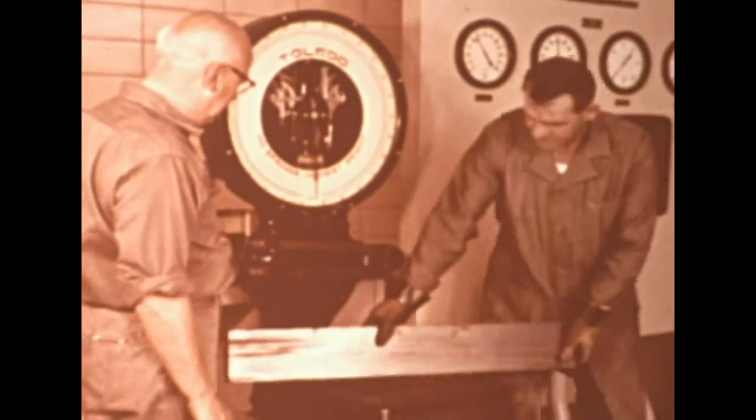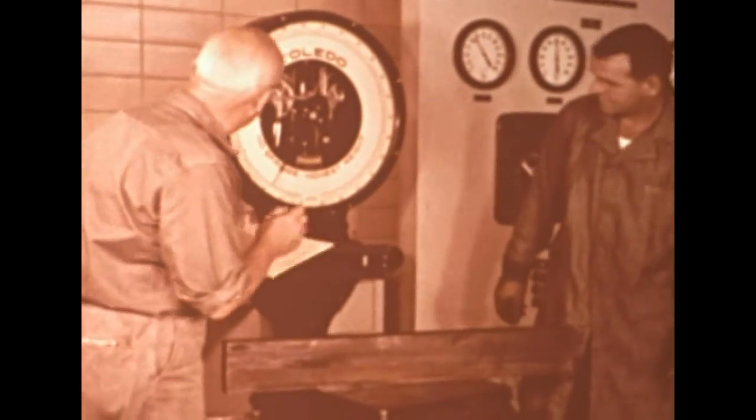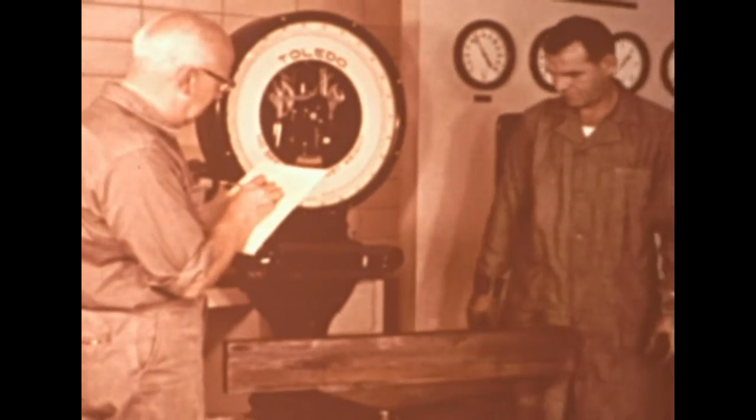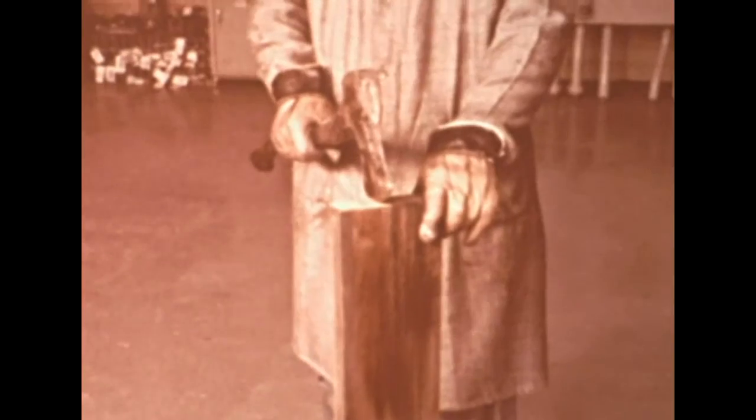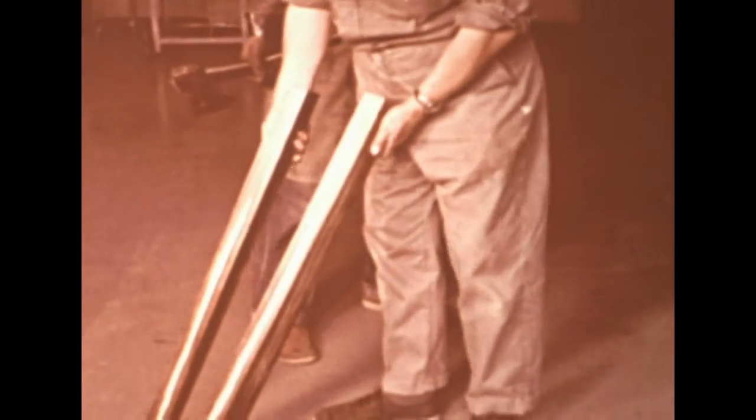Important standards have been developed by the wood preserving industry for preservatives and treatment methods. In this experiment, creosote was used as the preservative. Because of its dark color compared to that of the wood, the extent of penetration can be checked visually. Ideally, the entire piece should be impregnated.